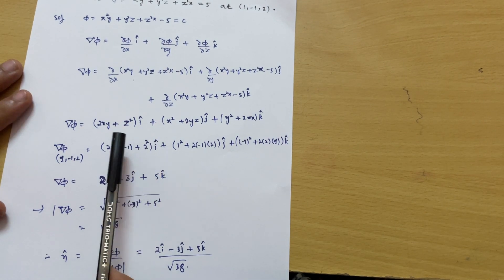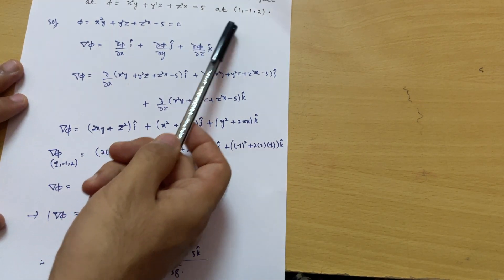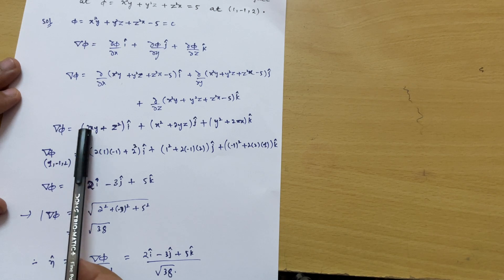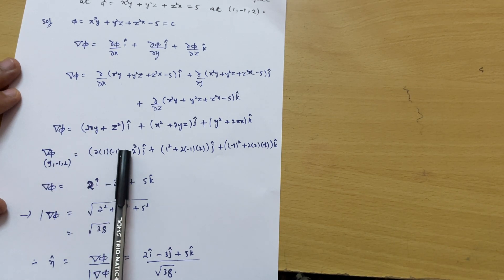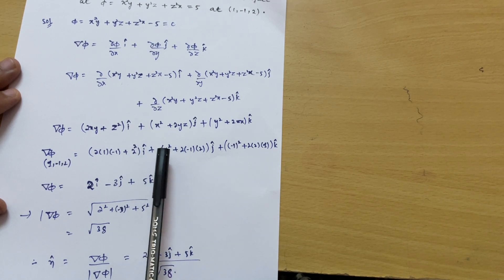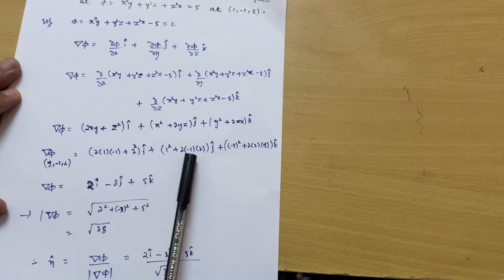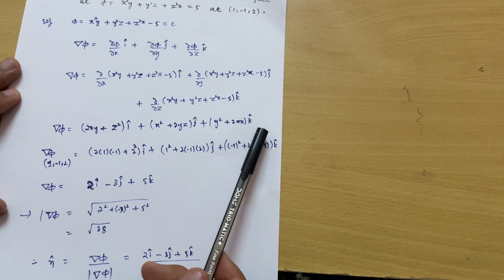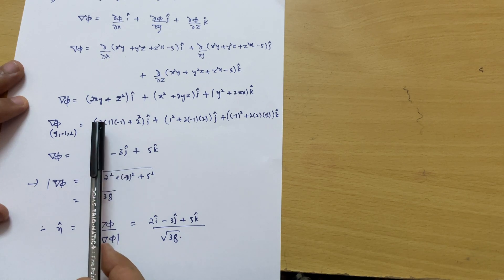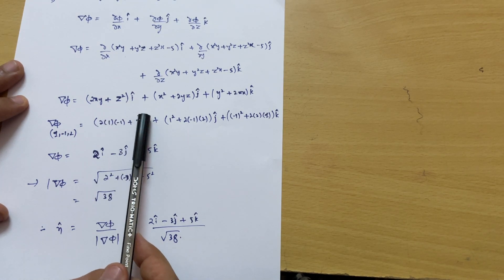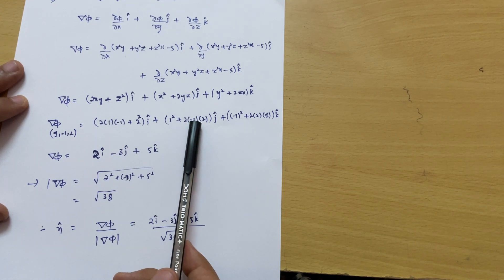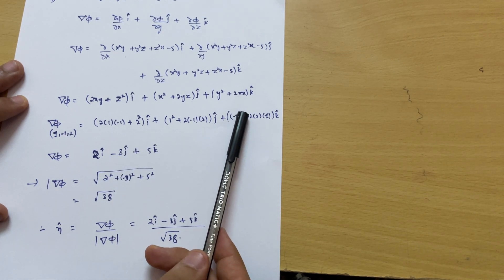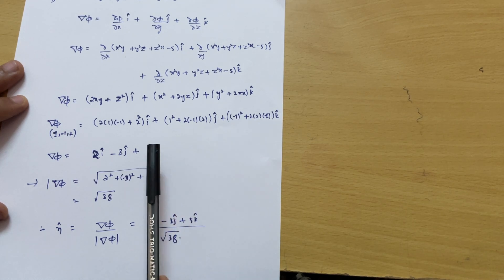Now we evaluate ∇φ at the point (1, −1, 2). Substituting x=1, y=−1, z=2: the î component is 2(1)(−1) + 2² = −2 + 4 = 2. The ĵ component is 1² + 2(−1)(2) = 1 − 4 = −3. The k̂ component is (−1)² + 2(2)(1) = 1 + 4 = 5. So ∇φ = 2î − 3ĵ + 5k̂.